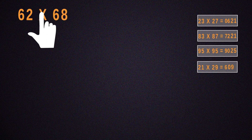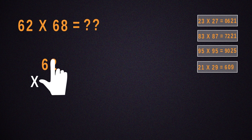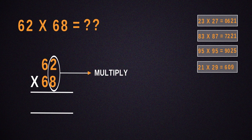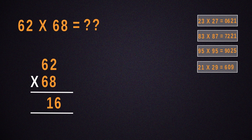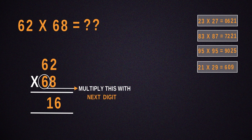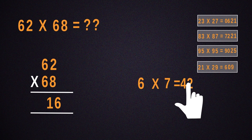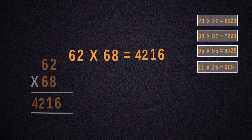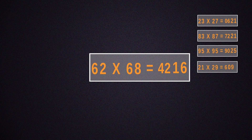Now, multiply 62 by 68. For that, the number obtained by multiplying 2 by 8 will be 16 and that should be put down. Then, multiply 6 with its next number, which is 7. Place the result next to 16 and we get 4,216 as our answer.